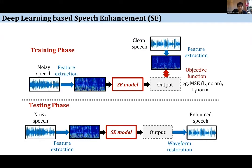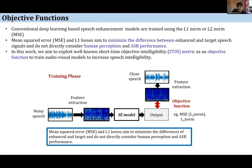Deep learning models are typically trained using objective functions such as L1 normalization or Mean Square Error (MSE). MSE aims to minimize the difference between the enhanced and target signals, but it does not consider human perception or automatic speech recognition performance — creating a mismatch. Recently, researchers have discovered that speech perception metrics such as STOI can be used as an objective function to further improve the intelligibility of the speech signal.